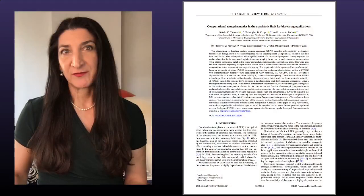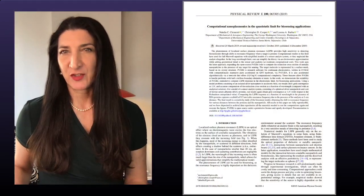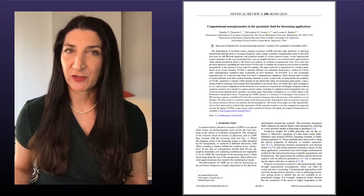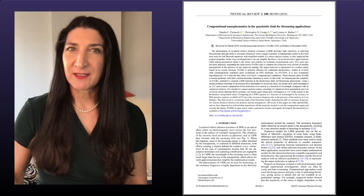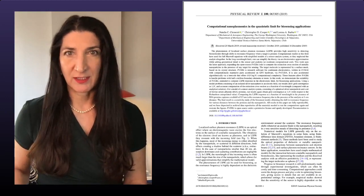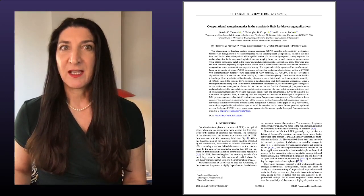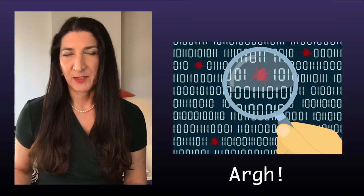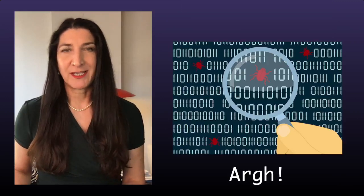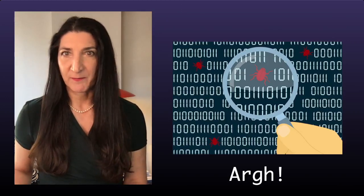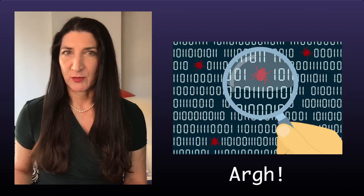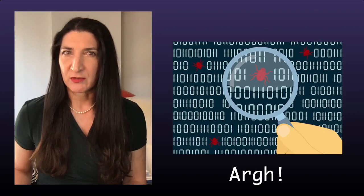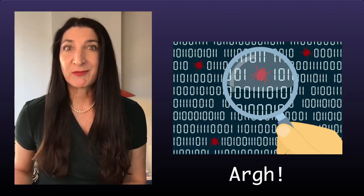Imagine this scenario. You published a paper a few months ago and a new member of your team is looking into this work for onboarding or to build from it. In the process, he or she finds a bug in the code that produced the published results. One of the terms of the equation for your mathematical model was entirely omitted. You look it over and over and there's no question there's a bug. A wave of panic goes through you. Will this alter the results? Will you have to submit a corrigendum in the journal, or worse, will your paper have to be retracted?